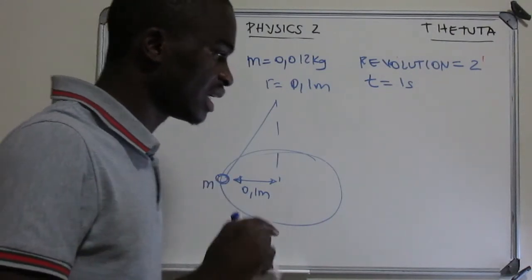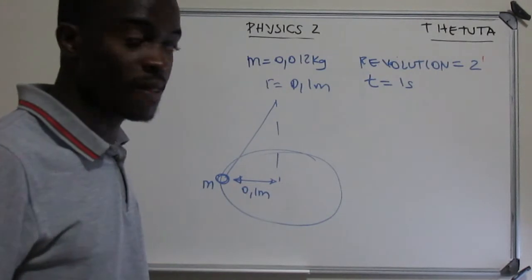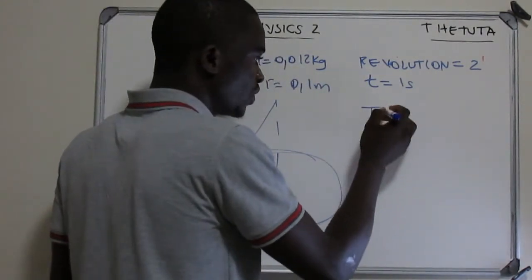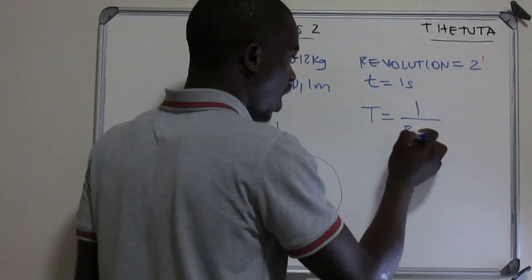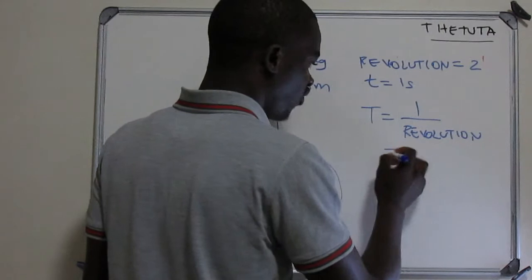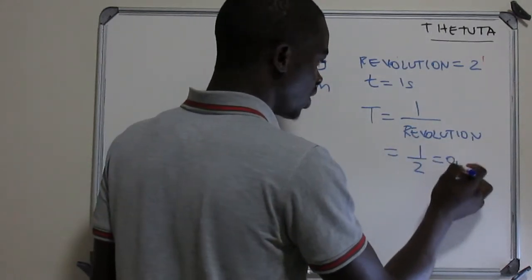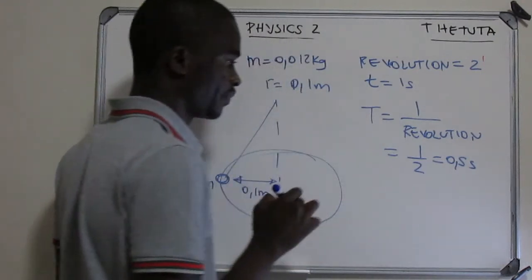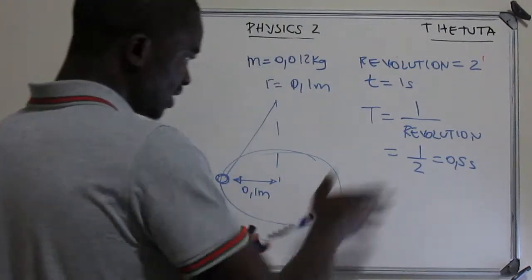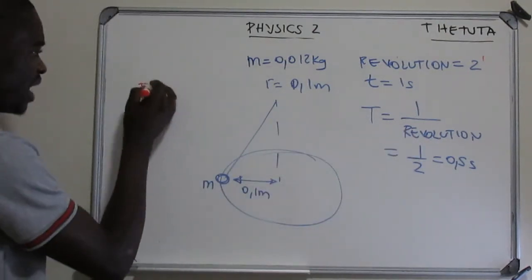The period is given by one over the revolution. The revolution is two because it made two turns, so the period is 1/2 = 0.5 seconds.